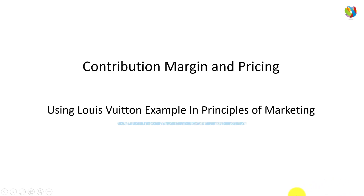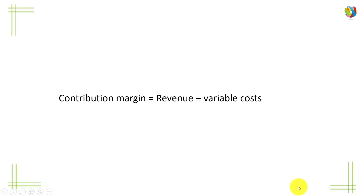Hello and welcome to this video on contribution margin and pricing. We'll be using the Louis Vuitton example in Principles of Marketing for this illustration. Contribution margin is revenue less variable costs, or in economics speak, revenue less marginal costs — we're ignoring fixed costs. The contribution margin is the contribution to covering, and hopefully exceeding, the fixed costs.